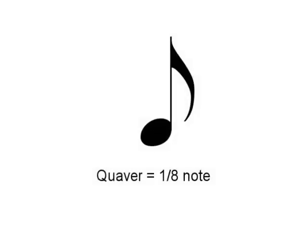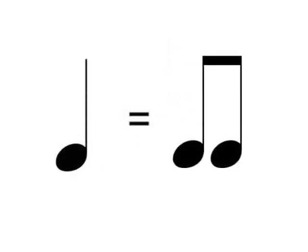Subdividing the crotchet even further, we come to the quaver. The quaver on its own is drawn like that — that's an eighth note. Now if you get two quavers together, just to keep the notation a bit neater, you would draw it with them joined together. So what you've got there is two quavers together, which is the equivalent of a crotchet. Two eighths is the equivalent of a quarter.